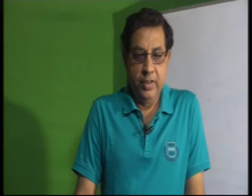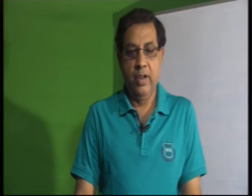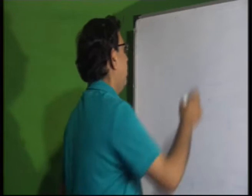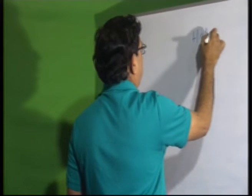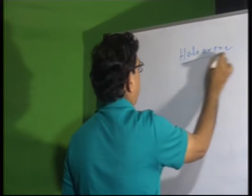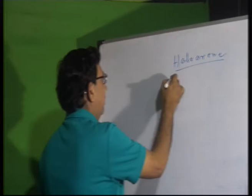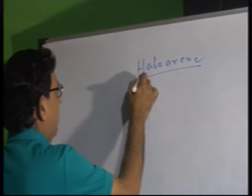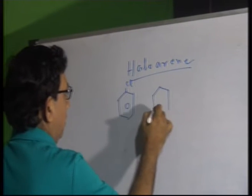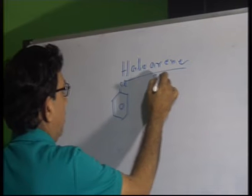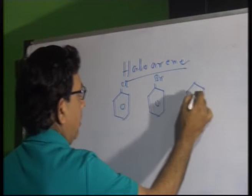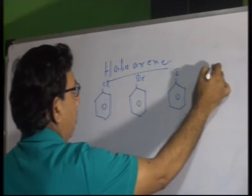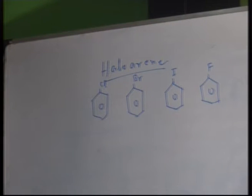Today I will discuss the preparation and properties of haloarenes. The general formula of haloarene consists of a benzene ring attached to a halogen. Examples include chlorobenzene, bromobenzene, iodobenzene, and fluorobenzene — these are all called haloarenes.